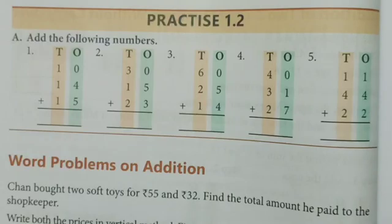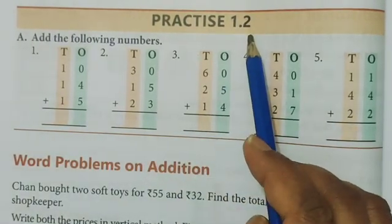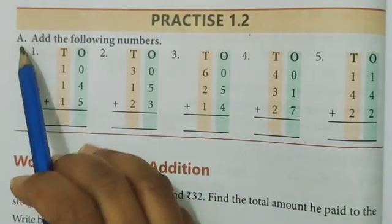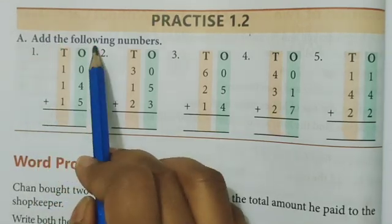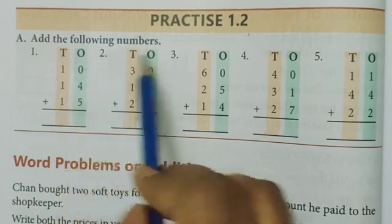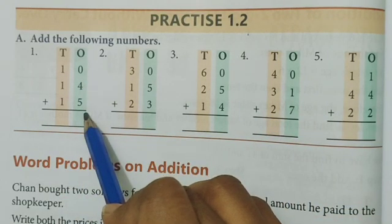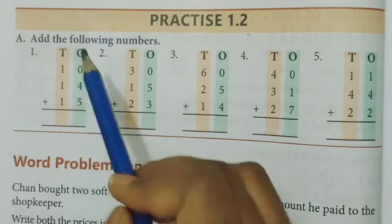Now depending on this we will solve the practice 1.2. Are you ready to solve this? Yes. Now see question A, read with me. Add the following numbers, that means jo neeche diye gaye number hai, we have to add. Give the answer.